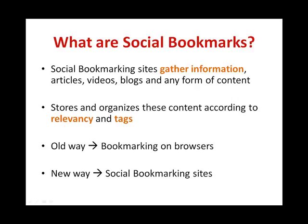Social Bookmarking sites gather information such as articles, videos, blogs, or any form of content. These contents are then stored and organized according to relevancy and meta tags. The use of meta tags helps the user better manage and sort through various web pages. Tagging creates standards of common word usage and a better system of organization among users.